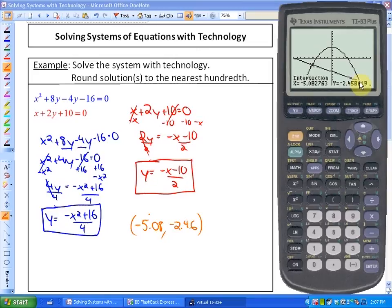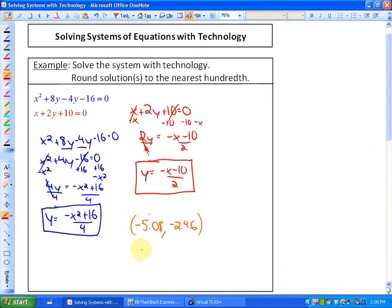Now to find the other intersection, go to second calculate intersect. You have to find each intersection point separately. Move close to the intersection point, hit enter enter enter, and in this case we have 7.08 and negative 8.54. So 7.08 and negative 8.54, there's our two coordinates or solutions.